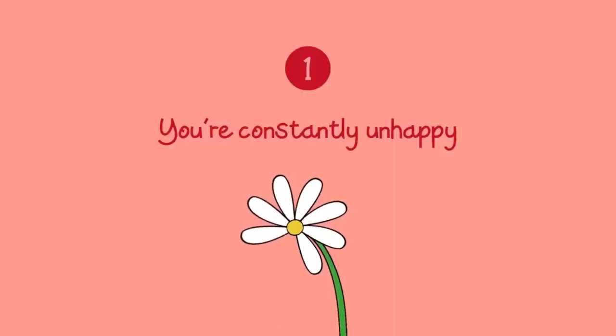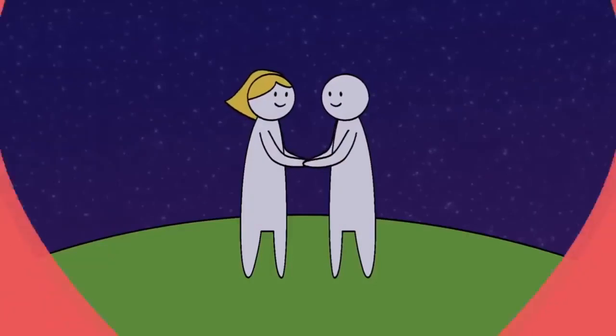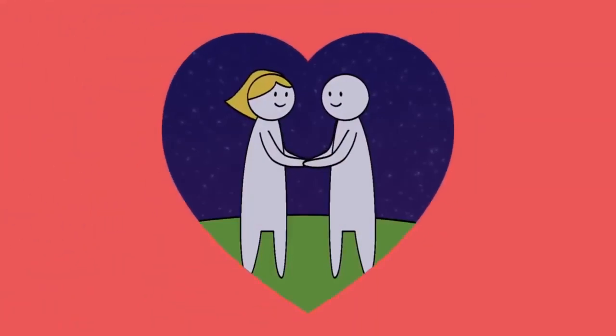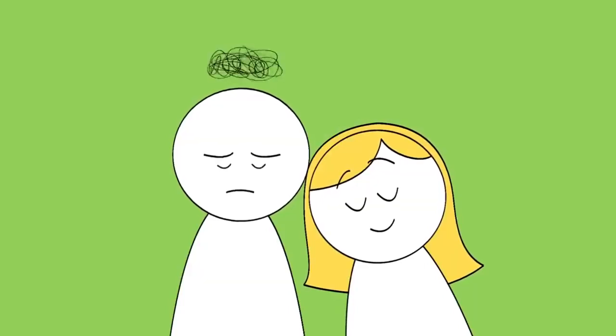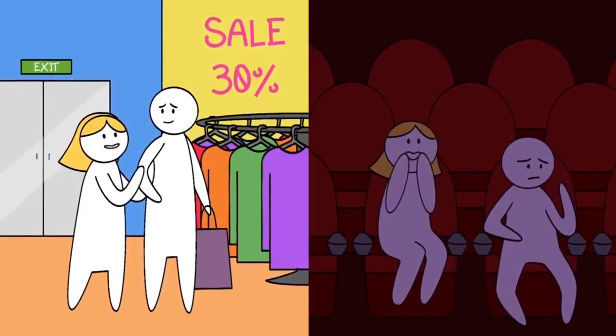One: you're constantly unhappy. Remember, loving relationships are supposed to be some of the most enjoyable parts of life. If you're constantly unhappy while in a relationship, you may be with the wrong person. This is especially true if you're feeling unhappy even when you're hanging out together and going on dates.